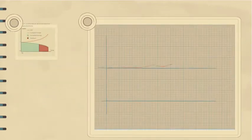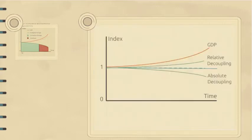If the economy grows and extraction or pollution remain constant or decrease, we call this absolute decoupling. If the economy grows and extraction or pollution grow but by less than economic growth, we call this relative decoupling.